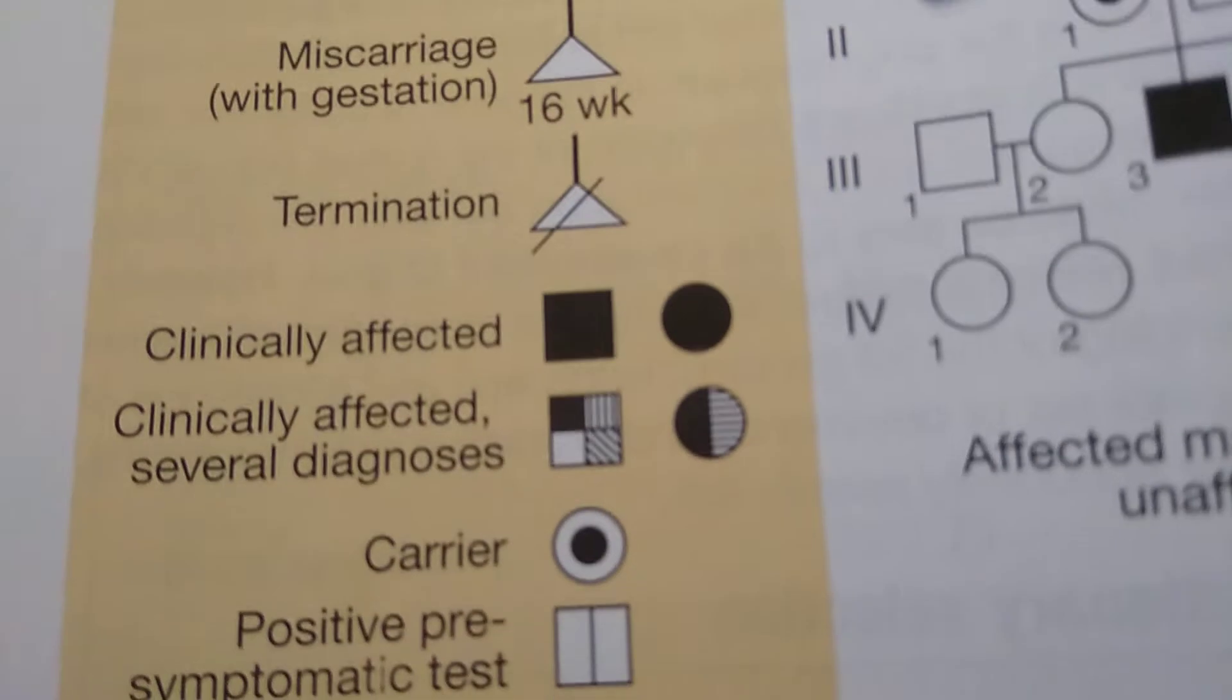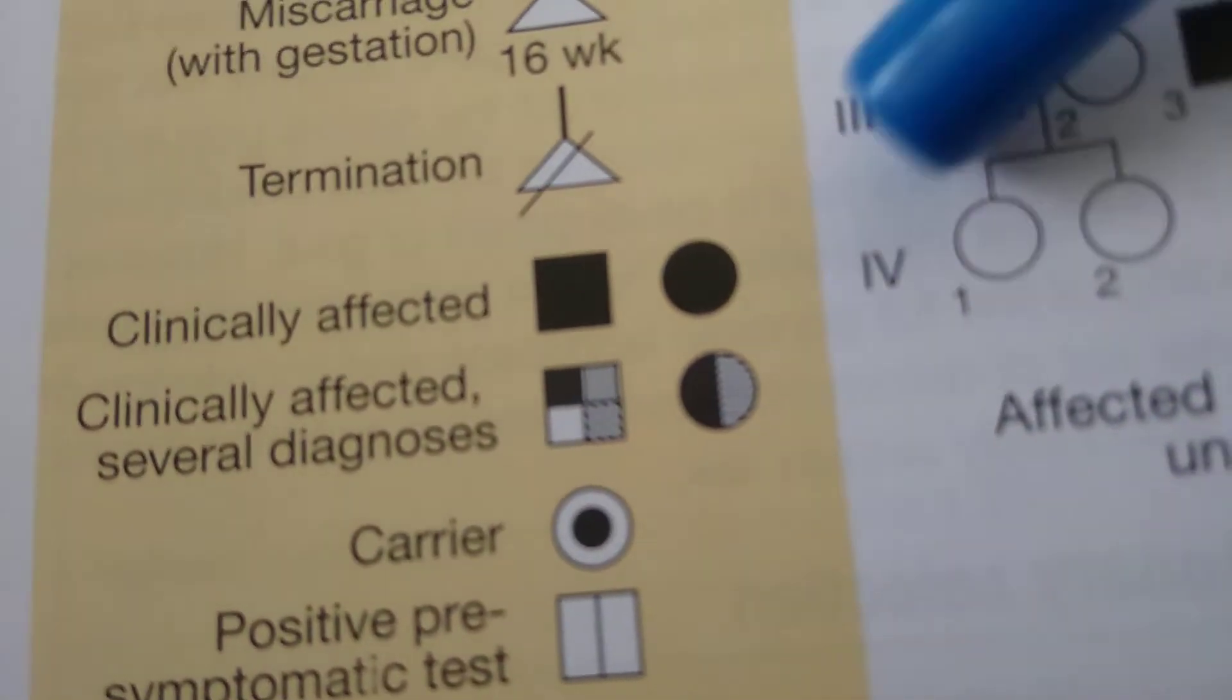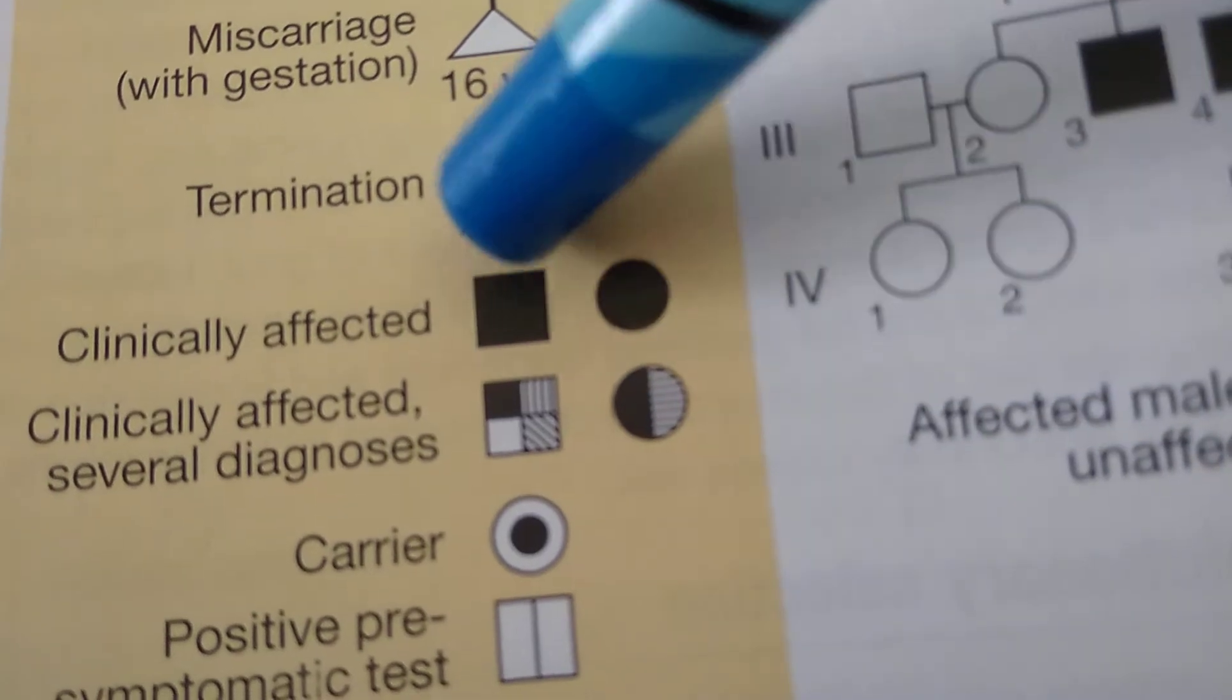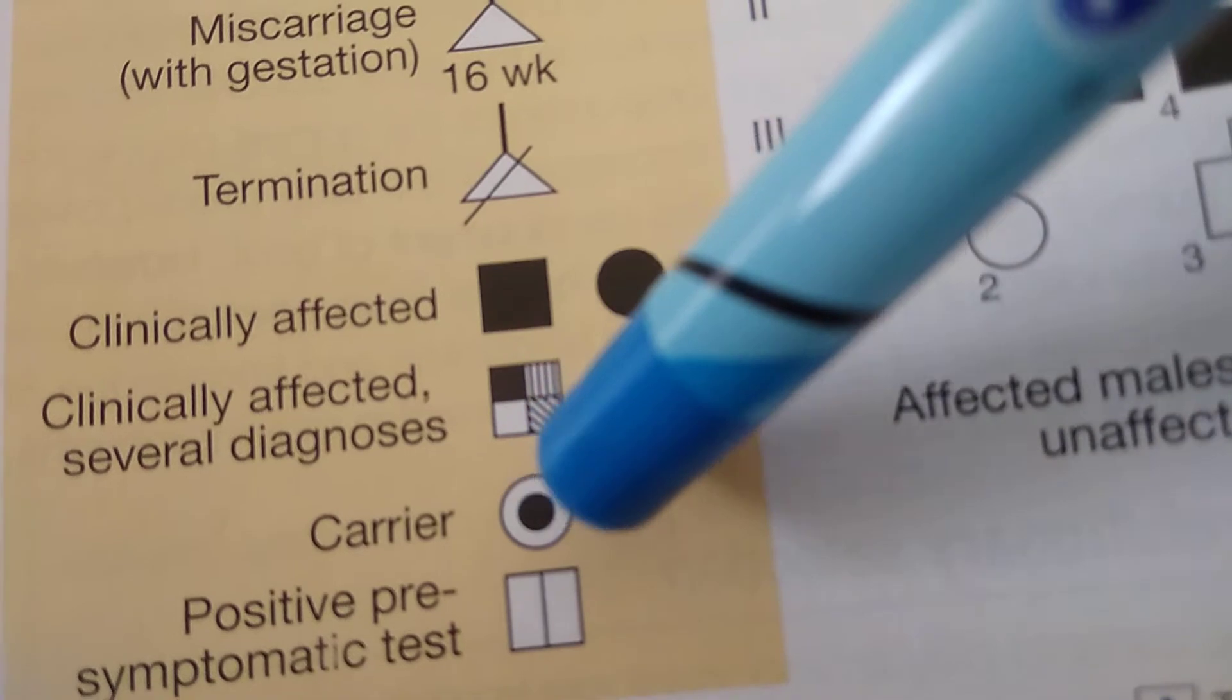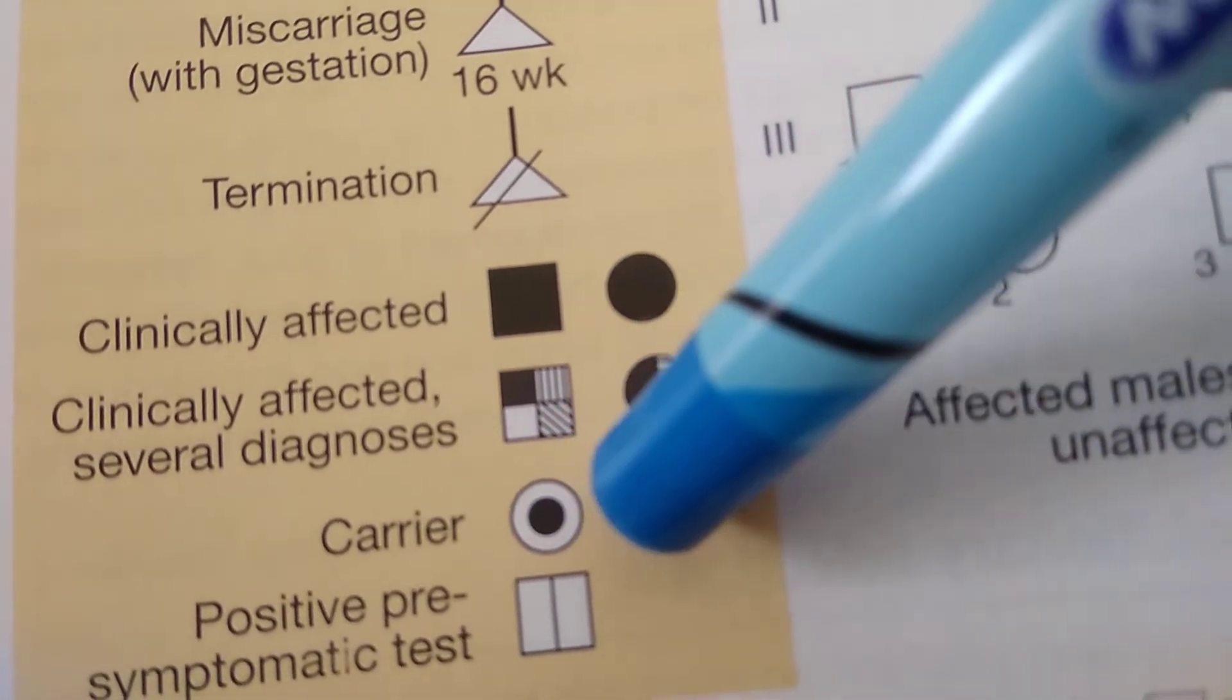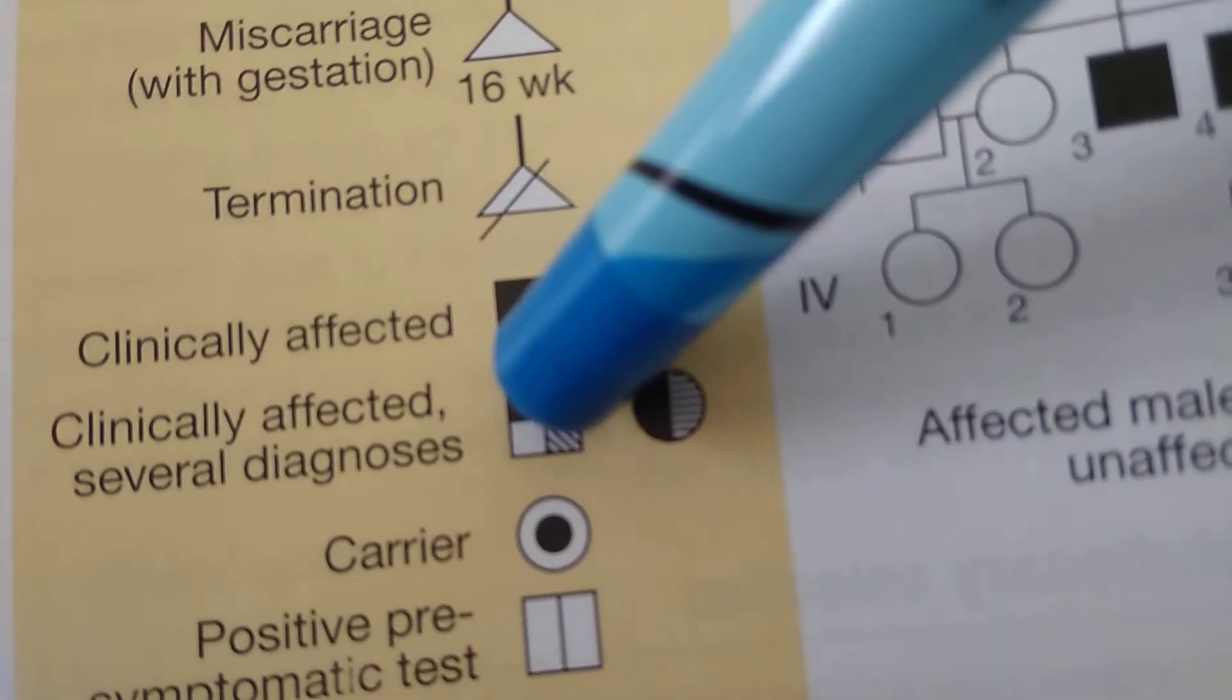Anyways, now look at these guys. This is very important for you to understand. If a person is clinically affected, then it will be solid like this. But if a person is a carrier, then it is not fully darkened. So you should understand the difference between a carrier and a clinically affected person.